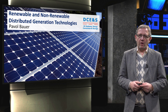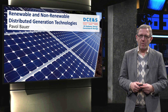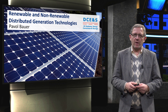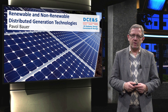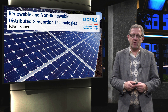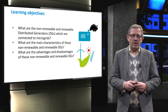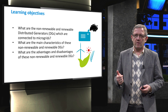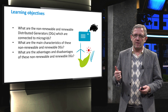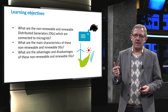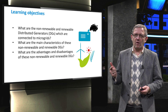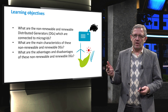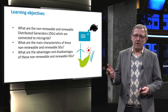Ladies and gentlemen, this video mainly addresses the non-renewable and renewable components which are connected to microgrids. We briefly survey distributed generators and review their main characteristics, advantages and disadvantages. The main learning objectives fall under three points: what are the non-renewable and renewable distributed generator technologies connected to a microgrid, what are their main characteristics, and what are their advantages and disadvantages?